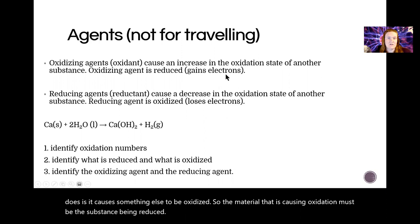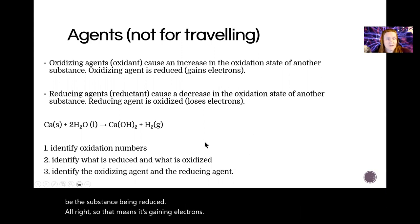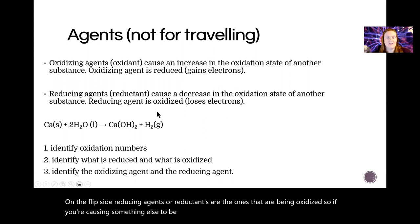On the flip side, reducing agents or reductants are the ones that are being oxidized. If you're causing something else to be reduced, you have to give up those electrons in order for that to happen.